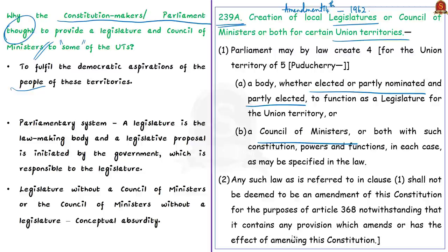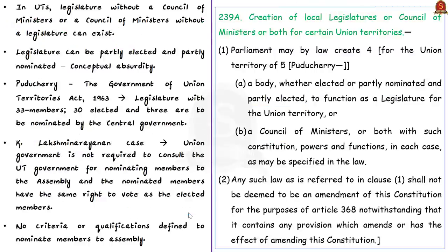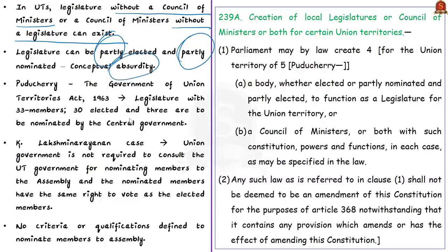In our constitutional scheme, a legislature is a law-making body and a legislative proposal is initiated by the government which is responsible to the legislature — neither can the legislature exist without a council of ministers, nor vice versa. Interestingly, in union territories there can be a legislature without a council of ministers or a council of ministers without a legislature. A legislature that is partly elected and partly nominated is another absurdity. A simple amendment in the Government of Union Territories Act of 1963 can create a legislature with more than 50% nominated members.